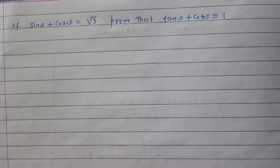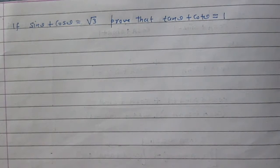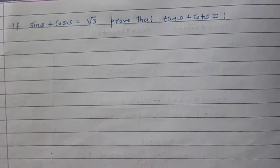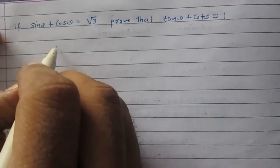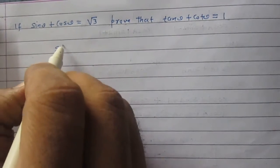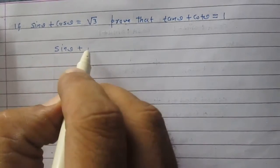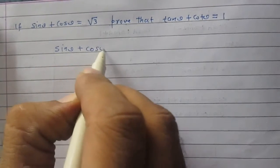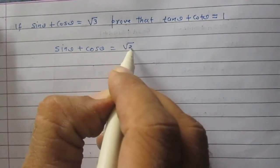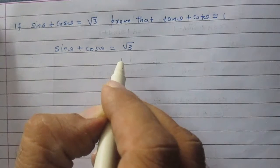If sin theta plus cos theta is equal to square root of 3, then prove that the sum of tan theta and cot theta is equal to 1. So, we are given that sin theta plus cos theta is equal to square root of 3.